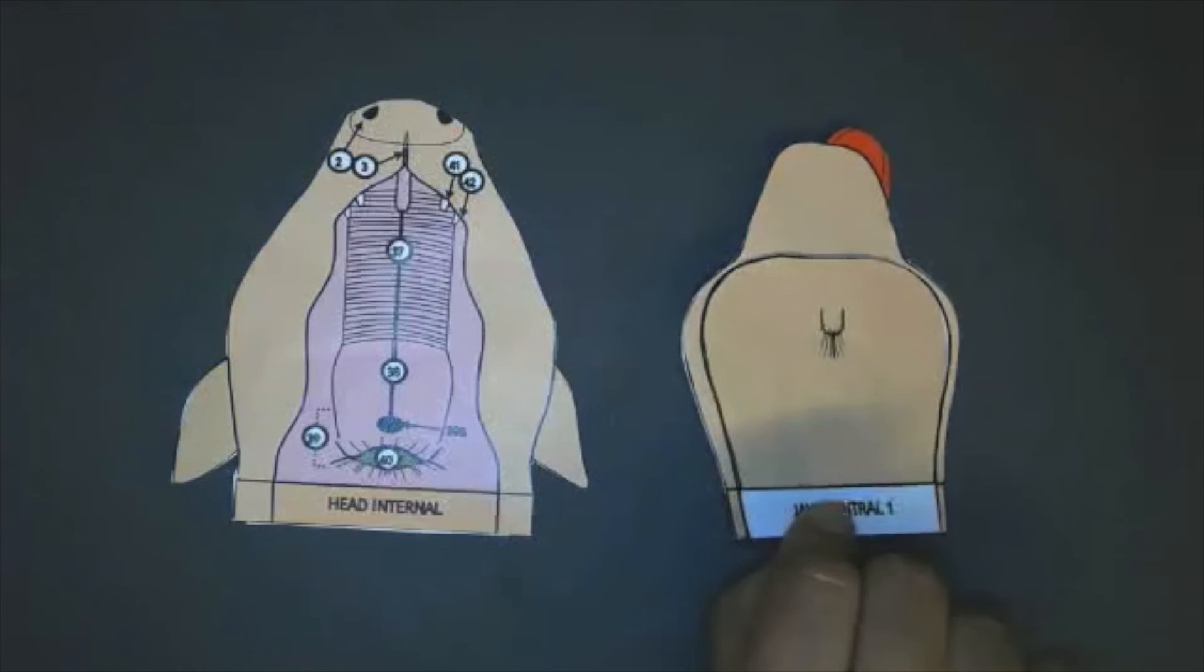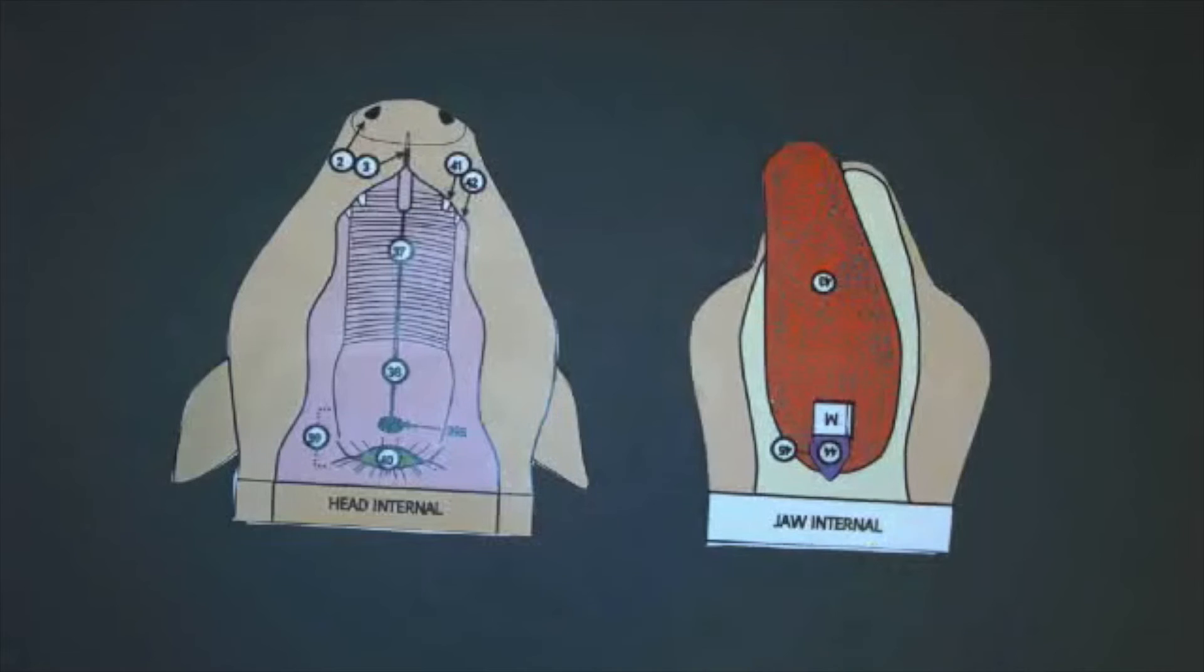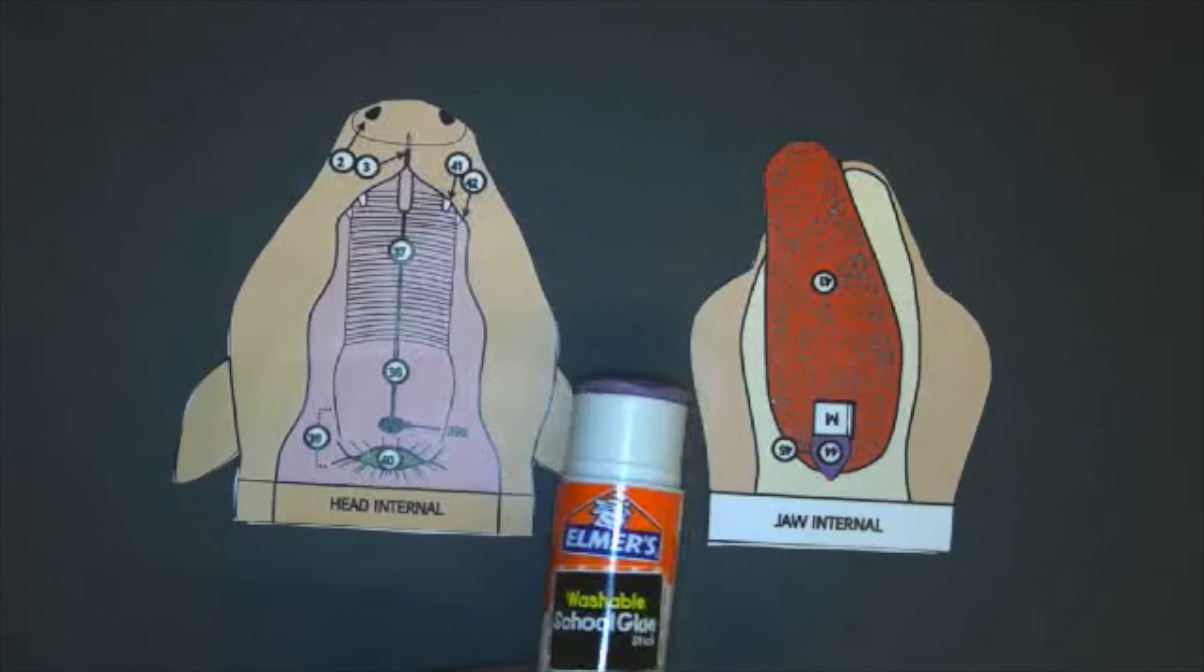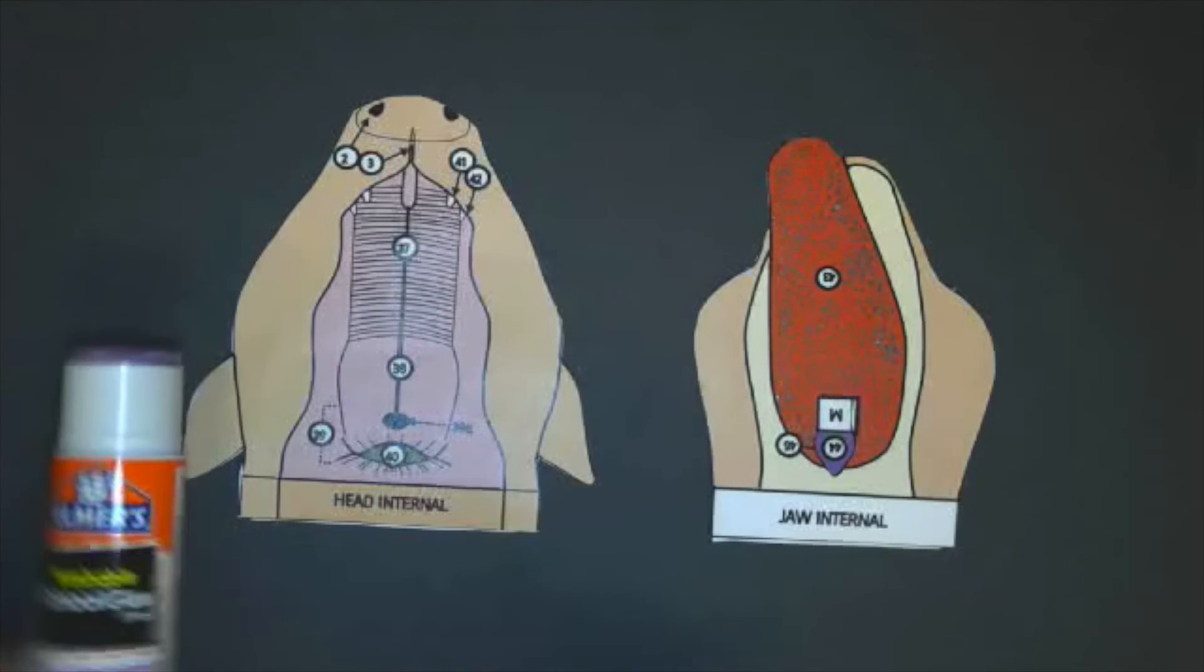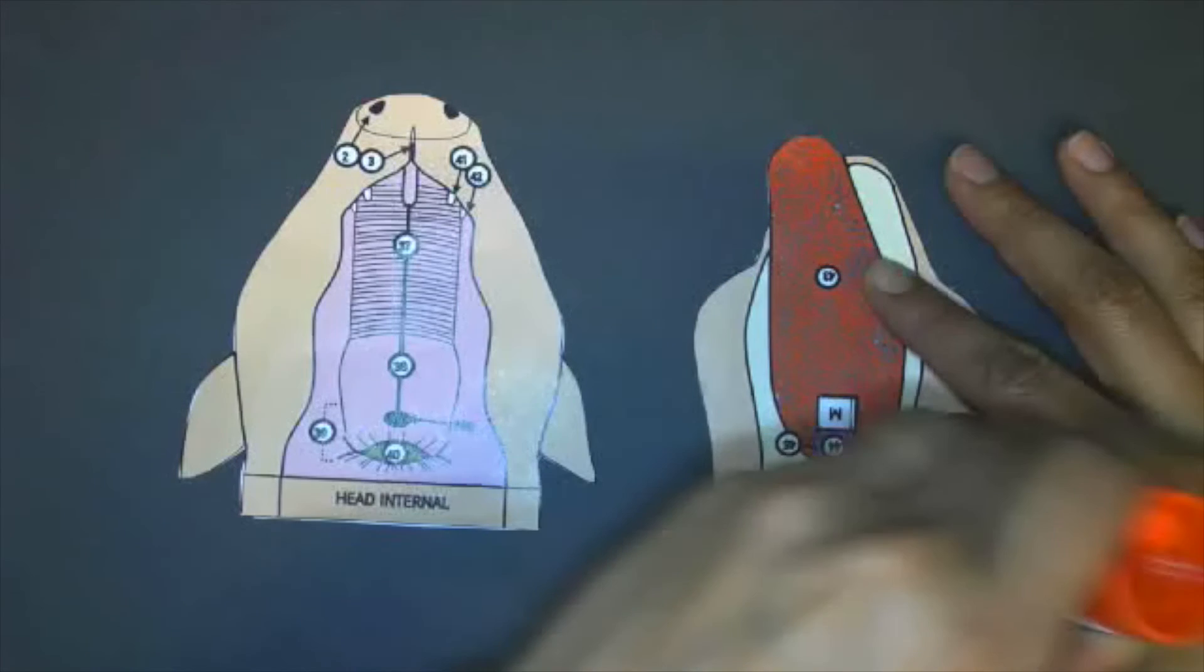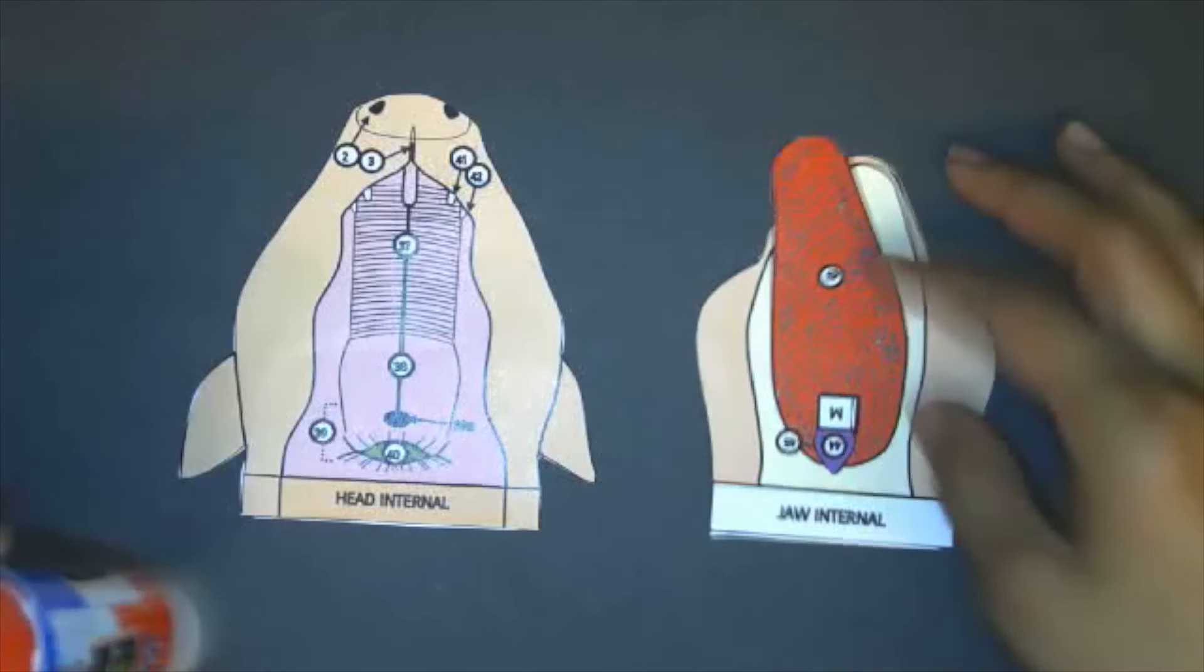So the way that I place them now is the way that you're going to glue them. Put some glue on the sides that say jaw internal and head internal. This is to build the entire oral cavity or the mouth of the pig. So when you attach them like so,